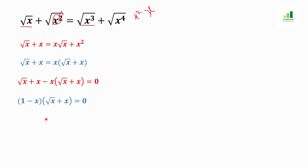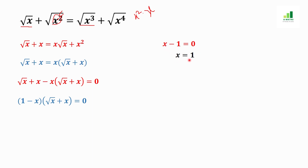Now we solve for x. Taking the first factor: 1 minus x squared equals zero. The x squared moves to the other side, giving x squared equals one, and taking the square root gives x equals one.